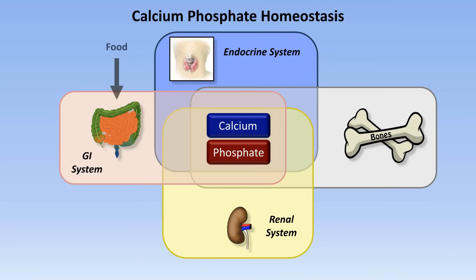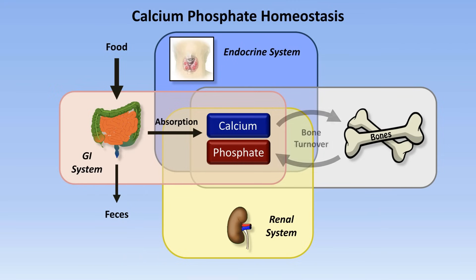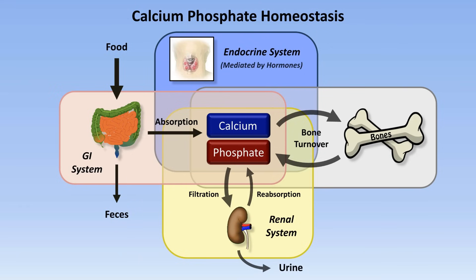Calcium and phosphate enter the system through the GI tract. Some is lost in the feces, while some is absorbed into the bloodstream. Both electrolytes undergo continuous exchange with mineral in our bones, as our bones are in a constant balance between resorption and formation, a process sometimes referred to as bone turnover. Both are freely filtered in the glomeruli of the kidney, where some is reabsorbed in the renal tubules, while that which is not reabsorbed is excreted in the urine. The endocrine system uses hormones to mediate the processes of GI reabsorption, bone turnover, and tubular reabsorption, in order to keep serum levels of both calcium and phosphate normal, despite fluctuations in intake and physiologic need.